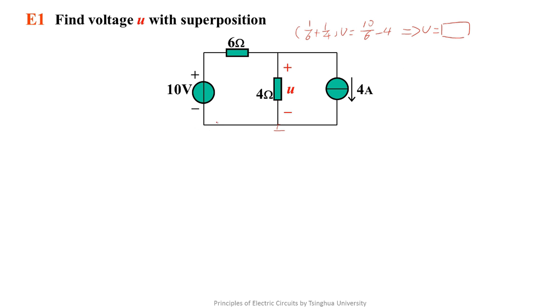If the voltage source takes effect alone and the current source doesn't, the corresponding circuit is like this. U' is the voltage of the 4 ohm resistor, which is 4 volts.